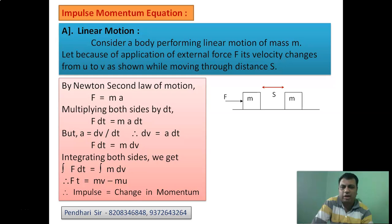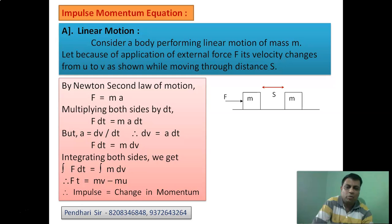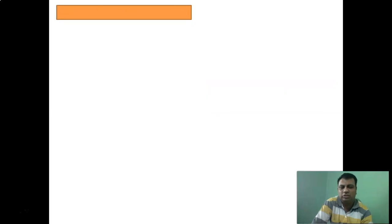Since acceleration a = dv/dt, we get a·dt = dv. Replacing a·dt with dv and integrating both sides, we get impulse on the left-hand side equal to final momentum minus initial momentum on the right — that is, the change in momentum. Since velocity changed from u to v and time went from 0 to t, impulse equals change in momentum.